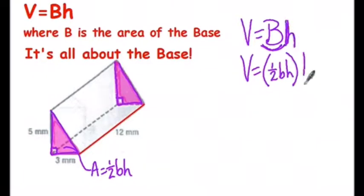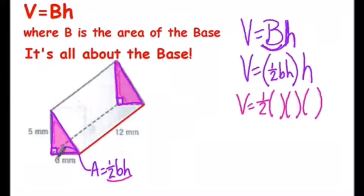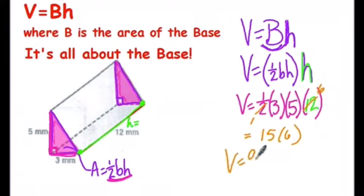So in this case, our base and height of our triangle are 3 times 5. Look for your right angle, that'll tell you what your base and height are. Our height here is the distance between the bases, and that's 12. You can cancel, which gives you 15 times 6, or 90 cubic millimeters.